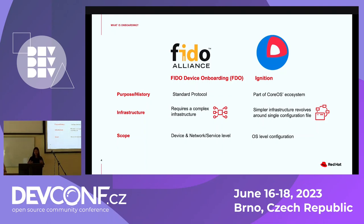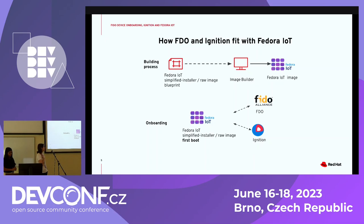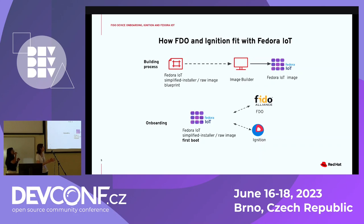We'll see more details as we go ahead. So how do FDO and Ignition fit with Fedora IoT? In order to make a Fedora IoT image, you would be using Image Builder. There have been previous talks at this conference about what is OSBuild Composer and Image Builder, so if you haven't seen them, I would recommend checking those talks. You would use a blueprint to make a Fedora IoT simplified installer or a raw image, then use Image Builder to produce that image. Once the image has been provisioned, you would use either FDO or Ignition — probably both at the same time — and at first boot the devices would be onboarded.